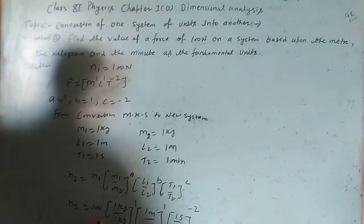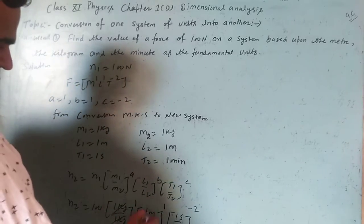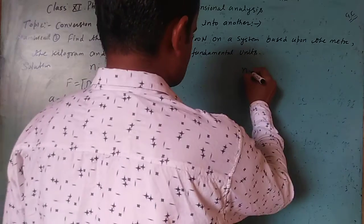The kilogram terms cancel out, meter terms cancel out. Now n2 = 100